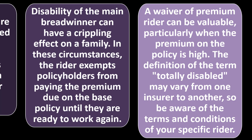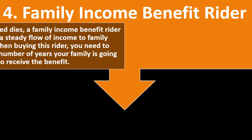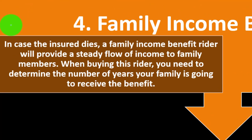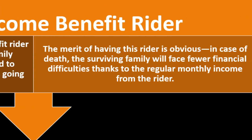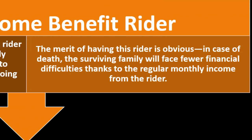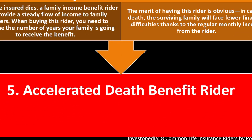Number four: the Family Income Benefit Rider. In case the insured dies, a family income benefit rider will provide a steady flow of income to family members. When buying this rider, you need to determine the number of years your family will receive the benefits. It functions similarly to an annuity-type payment, paying out income in a fashion similar to a regular salary. The merit is clear: in case of death, the surviving family will face fewer financial difficulties thanks to the regular monthly income from the rider.